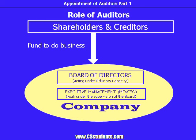Executive management includes the managing directors, chief executive officer, etc. They generally work under the supervision of the board. So, company is a legal entity wherein shareholders and creditors are putting money for business. Directors and executives are putting efforts, and benefits are being transferred to the creditors and to the shareholders.